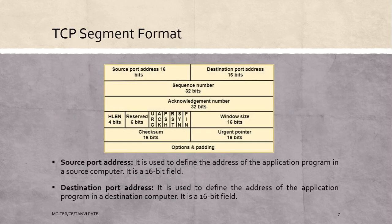Next is TCP segment format. First is source port address: it is used to define the address of the application program in the source computer; it is a 16-bit field. Next is destination port address: it is used to define the address of the application program in the destination computer; it is also a 16-bit field.